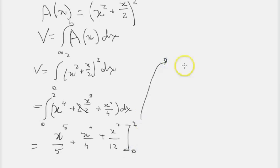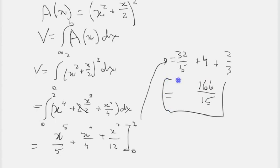And so then once we plug in for 2 there, we will get 32/5 plus 4 plus 2/3. And once we figure out a common denominator, which ends up being 15 for that, we get 166/15. And that is the volume. And that is how we find volumes with non-circular cross-sections.